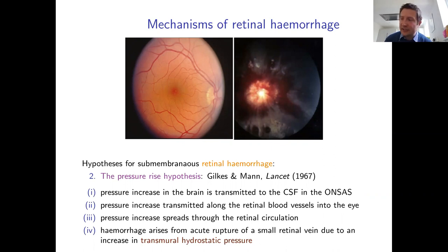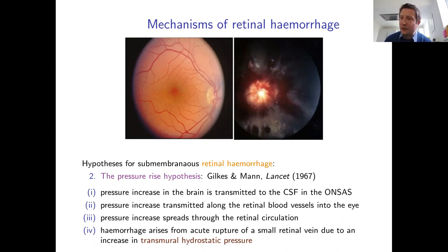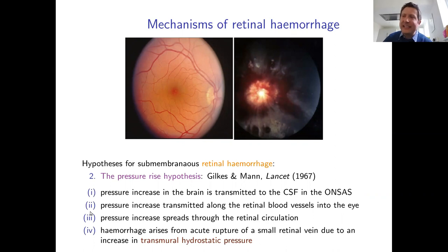As the pressure disturbance spreads through vessels that become smaller and potentially weaker, eventually a vessel may rupture when the transmural pressure is large enough. Clinically, the most significant ruptures are seen on the venous side, where vessels are weakest. This is the pressure rise hypothesis, and the aim is to provide theoretical, mathematically modeled evidence for it. The talk will cover four stages: CSF flow along the ONSAS, blood vessel response, retinal circulation propagation, and rupture.